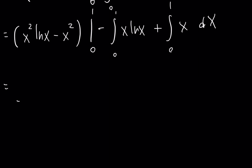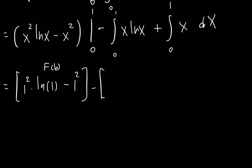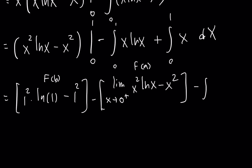Now we evaluate the f(b) term first: 1 squared times the natural log of 1 minus 1 squared. Then the f(a) term becomes a limit, so the limit as x approaches 0 from above of x squared ln x minus x squared. Minus the integral from 0 to 1 of x ln x, plus the integral from 0 to 1 of x dx.